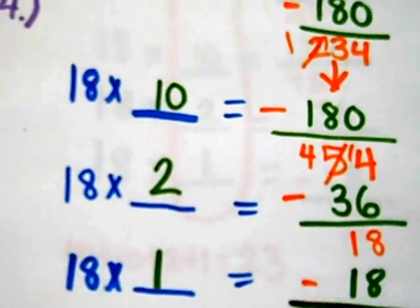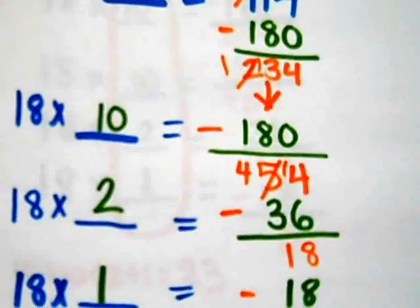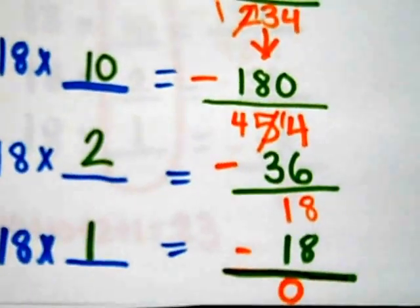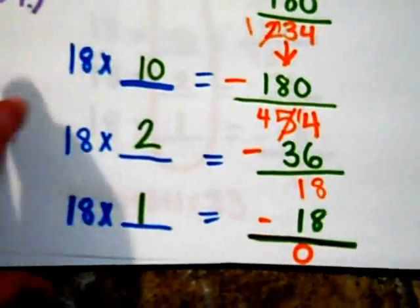So I use 18 times 1 and I get 18, with a final difference of 0. 0 is definitely the lowest form.